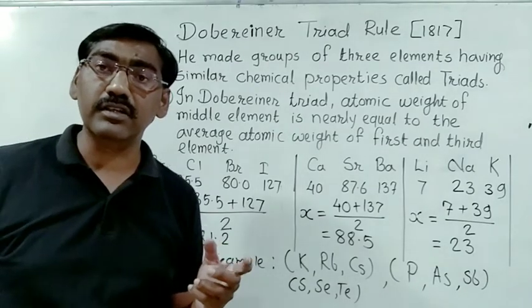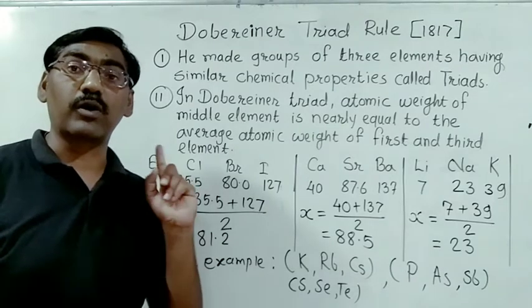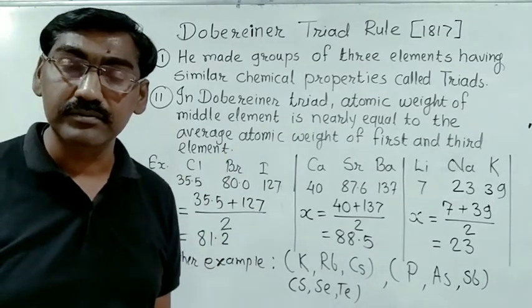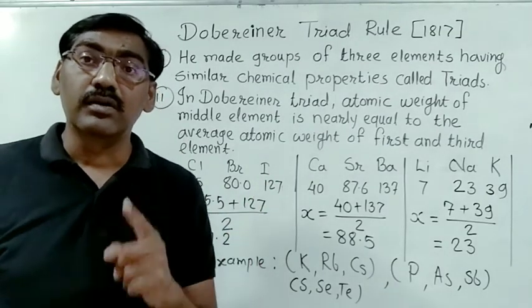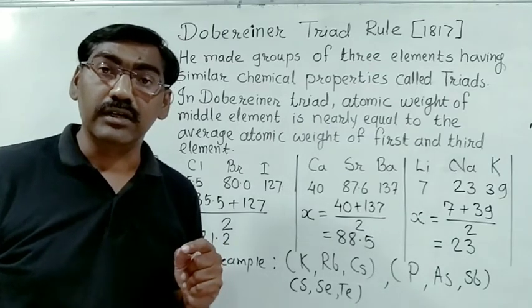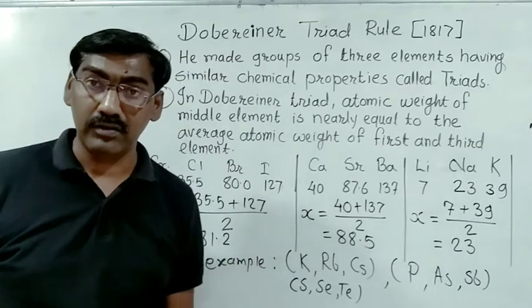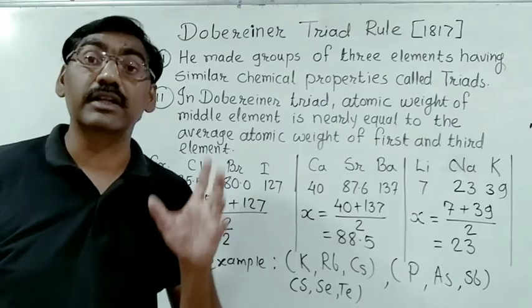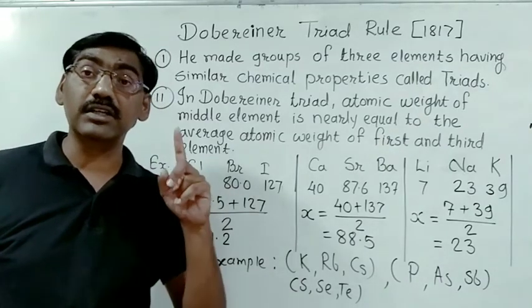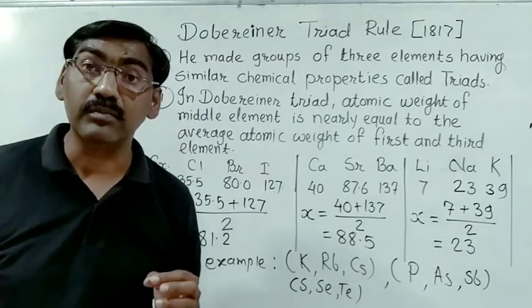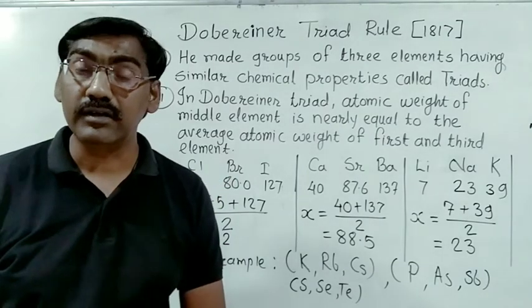There are some limitations with Dobereiner's Triads. This rule is not applicable to D-block elements, which form the central portion of the periodic table, and F-block elements, which are placed at the bottom in two rows. The triad rule does not work for D-block and F-block elements — this is a major limitation of Dobereiner's Triads.